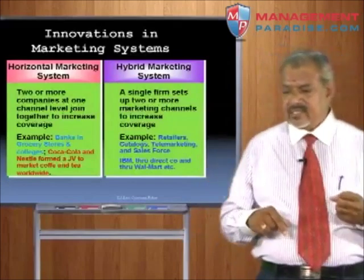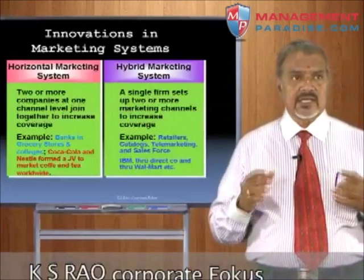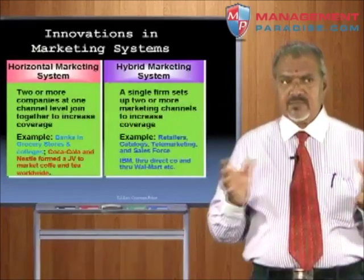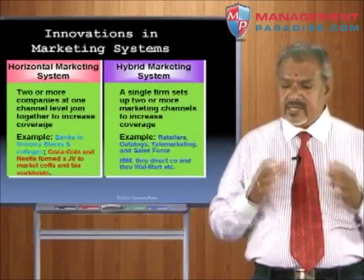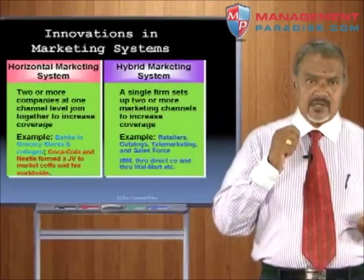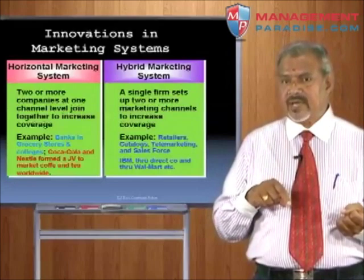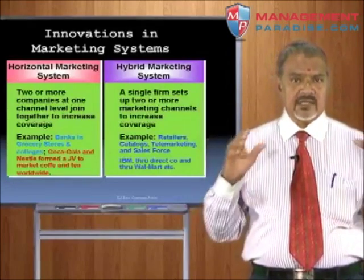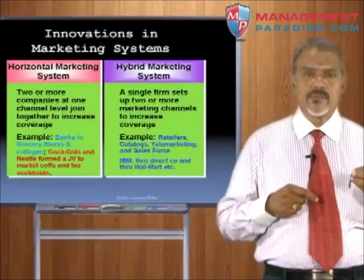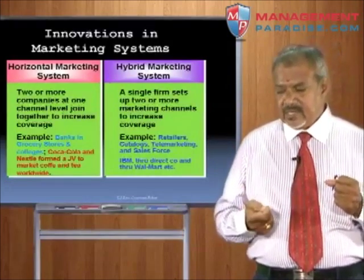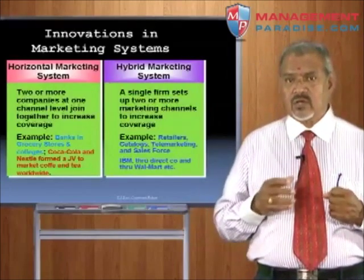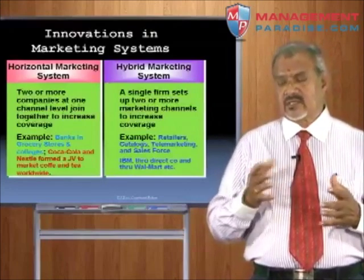The hybrid marketing system is when a single firm sets up two or more marketing channels to increase coverage — for example, retailers, catalogs, telemarketing, and a salesforce. Various marketing channels operate in the same market to sell a particular product. Retailers keep stock and sell to customers, telecallers call customers and offer products, and the company can also operate a direct salesforce in the same market. This mixing of two or three channels together is the hybrid system.